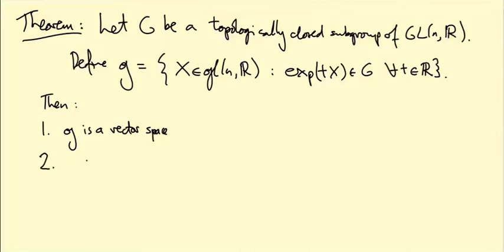Two, we need a bracket operation on little g. We have a bracket operation on little gl(n), which is just a commutator bracket. So we're going to use that bracket. But if we're going to use that bracket, we need to make sure that when we take X and Y in little g, their bracket is also in little g. Otherwise, the bracket operation doesn't make sense on little g.